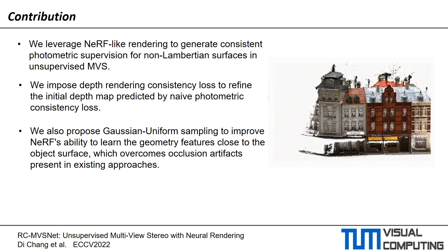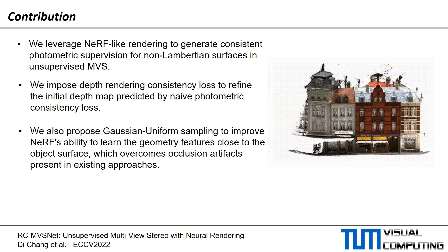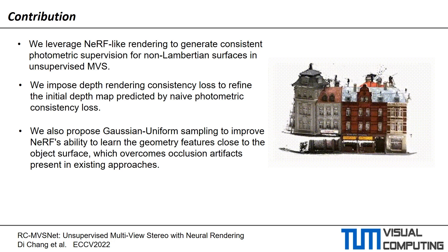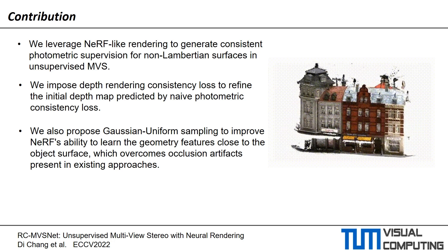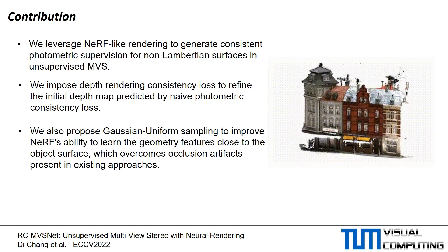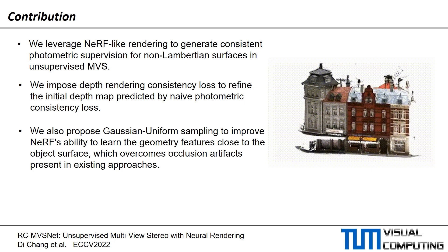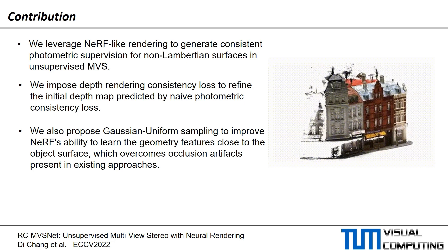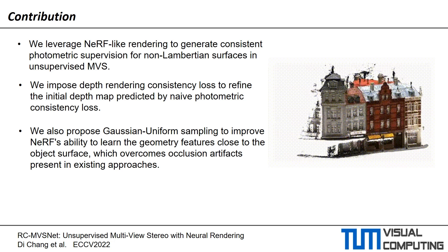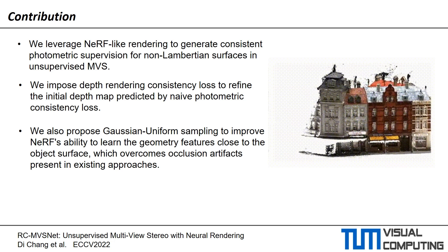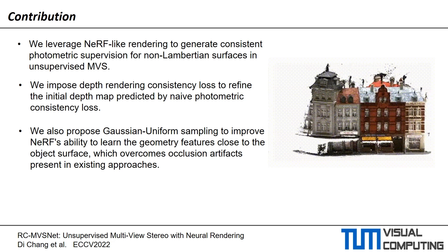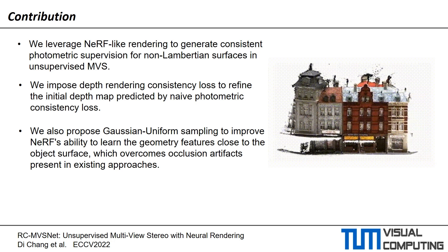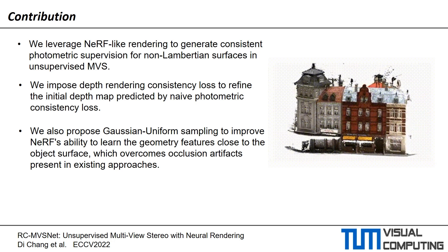In summary, we leverage NeRF-like rendering to generate consistent photometric supervision for non-Lambertian surfaces in an unsupervised multi-view stereo setting. We impose depth rendering consistency to refine the initial depth map predicted by a naive photometric consistency loss. And we propose Gaussian uniform sampling to improve NeRF's ability to learn the geometry features close to the object's surfaces, which overcomes occlusion artifacts present in existing approaches.